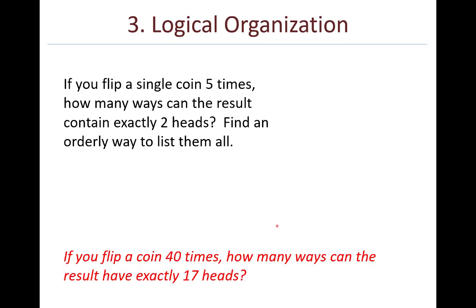Here's the second question. If you flip a coin, if you flip a single coin five times, how many ways can the result contain exactly two heads? Find an orderly way to list them all. And I might start off by saying, let's just imagine that the two heads are the first, and then I'll just use blanks to represent the tails to make it a little bit easier. In what other ways can those two heads appear among the five positions?